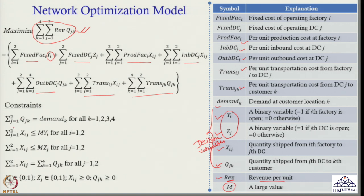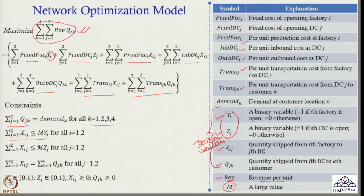Then I have a few constraints. First, demand must be satisfied: at each of the 4 markets (k=1,2,3,4), the sum of qjk over j should equal demand k — so what I am sending from various distribution centres to demand points must match the demand at each customer's location. The next constraint uses the big-M formulation: if yi=1 the factory is open and capacity is M (a very large value, implying unlimited capacity in this model). If yi=0 the factory is closed and the capacity comes down to 0, so nothing can be sent from that factory.